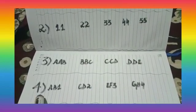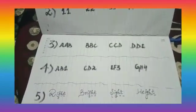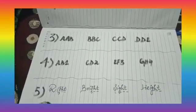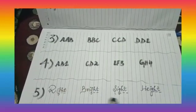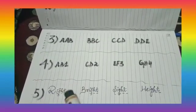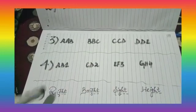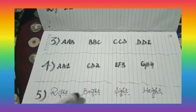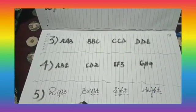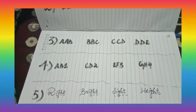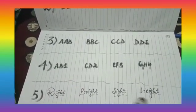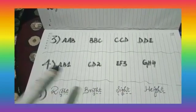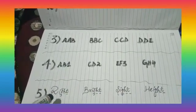In the last example we have some words given. In each word there is something the same — let us check. The first word is 'right,' the next word is 'bright,' the third word is 'sight,' and the fourth one is 'height.' Let us check what is the same in these given words.